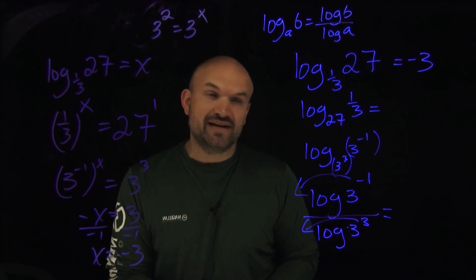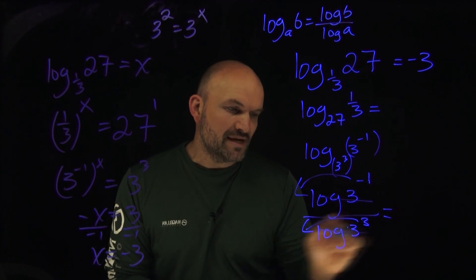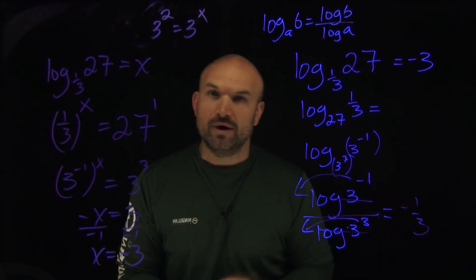And therefore that's going to leave me with negative one-third as my log of threes are both going to divide out. So therefore that's going to be negative one-third.